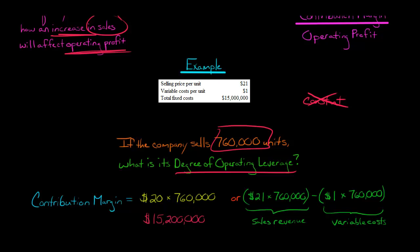Alternatively, you get to the same answer, but you could actually calculate out the sales revenue, the total $21 times 760,000, and then subtract the total variable cost, which is $1 times 760,000. But you get to the same place either way. It's $15.2 million is the total contribution margin.